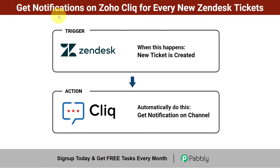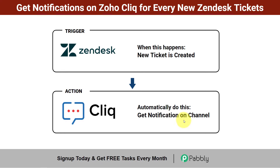In this video, we will learn how you can automatically get notifications on Zoho Cliq for every new Zendesk ticket. Zendesk is a ticketing software and Zoho Cliq is a team communication software just like Slack. I want that as soon as a new ticket is created in Zendesk, me and my team should automatically get a notification on a Zoho Cliq channel so that we are always updated about new ticket generations along with all the ticket details. Come with me and I'll show you the whole process step by step.